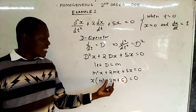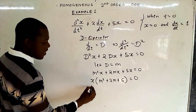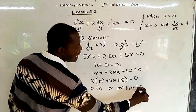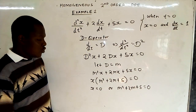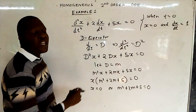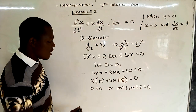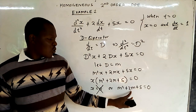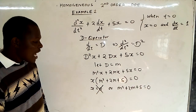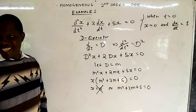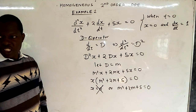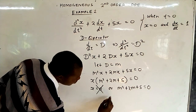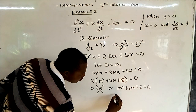When two factors equal 0, it means either the first factor or the second factor is 0. When x equals 0, this second order homogeneous ODE does not exist. So we now have m squared plus 2m plus 5 equals 0 as our auxiliary equation.